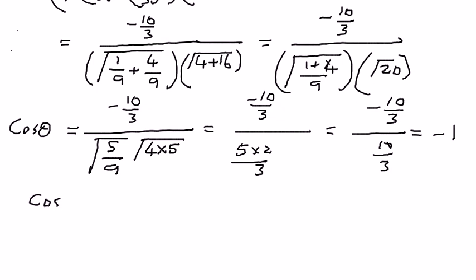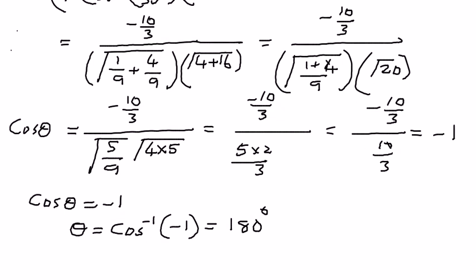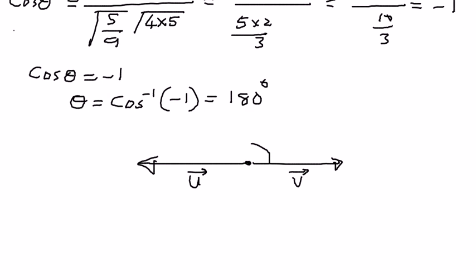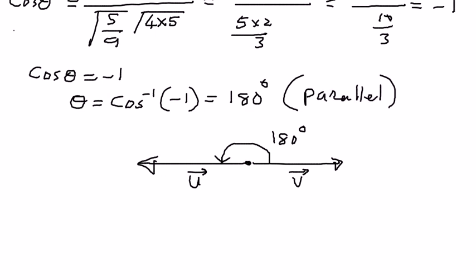Therefore, cosine theta is equal to negative 1. Therefore theta is going to be equal to cosine inverse of negative 1, which is equal to 180 degrees. The angle between these two vectors is 180 degrees. Therefore, we can conclude that these two vectors are parallel to one another — they are not perpendicular, they are parallel. In my next presentation, we shall look at some more examples related to orthogonal vectors.